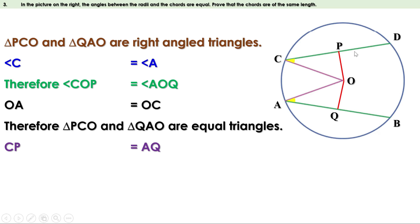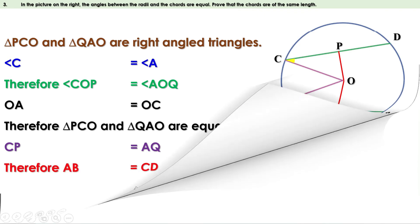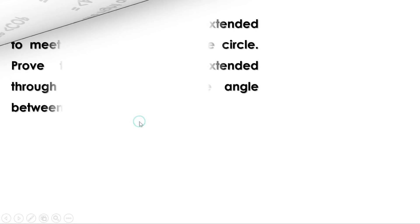The perpendicular from the center to the chord bisects the chord. Therefore CP and PD are equal, or CP is half CD. The same way, AQ is half AB. Since CP equals AQ, AB equals CD — or the chords are of the same length.